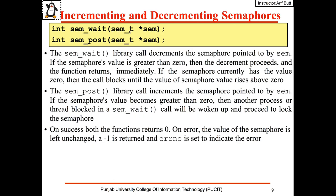The sem_wait library call decrements the semaphore pointed to by the argument sem. If the semaphore's value is greater than zero then the decrement proceeds and the function returns immediately. If the semaphore currently has the value zero then the call blocks until the semaphore value rises above zero. On the contrary, sem_post increments the semaphore pointed to by the argument sem.